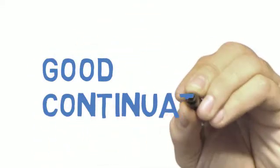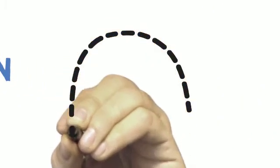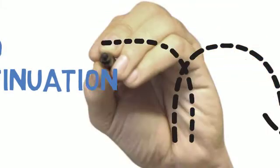Good continuation refers to predictability and simplicity, our tendency to group lines and curves that follow a smooth, established direction rather than a sharp turn. It helps us distinguish two objects from one another when they intersect.